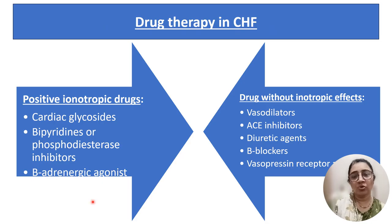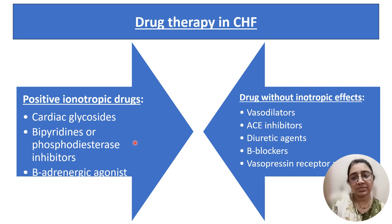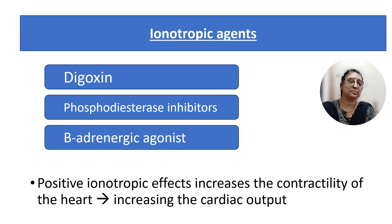There are two groups for drug therapy for heart failure. First is the positive inotropic drugs, and another group is drugs without inotropic effect. Positive inotropic drugs include cardiac glycosides, bipyridine or phosphodiesterase inhibitors, and beta adrenergic agonists. Drugs without inotropic effect include vasodilators, ACE inhibitors, diuretics, beta blockers, and vasopressin receptor blockers.